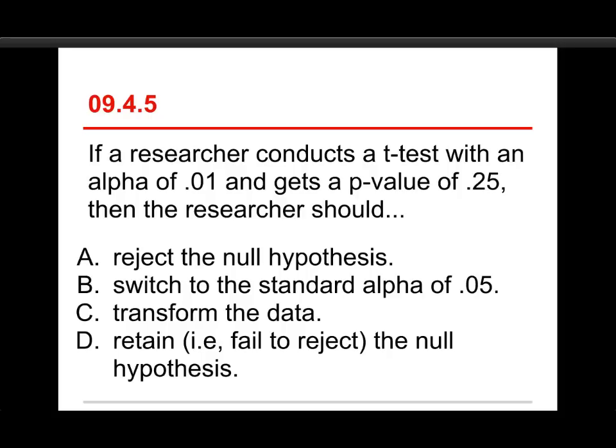Last one, number five. If a researcher conducts a t-test with an alpha of 0.01 and gets a p-value of 0.25, then the researcher should: reject the null hypothesis, switch to the standard alpha of 0.05, transform the data, or retain—that is, fail to reject—the null hypothesis. And in this case, you're going to retain. You're going to fail to reject the null hypothesis.